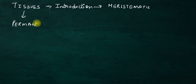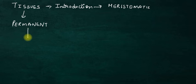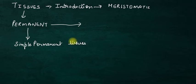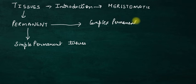Permanent tissues are also very important from the exam point of view. Generally, these topics seem very difficult, but once you understand them, they are actually very easy. Now, permanent tissues are categorized into two types. First, simple permanent tissues. Second, complex permanent tissues. We will talk about further types within each of these.